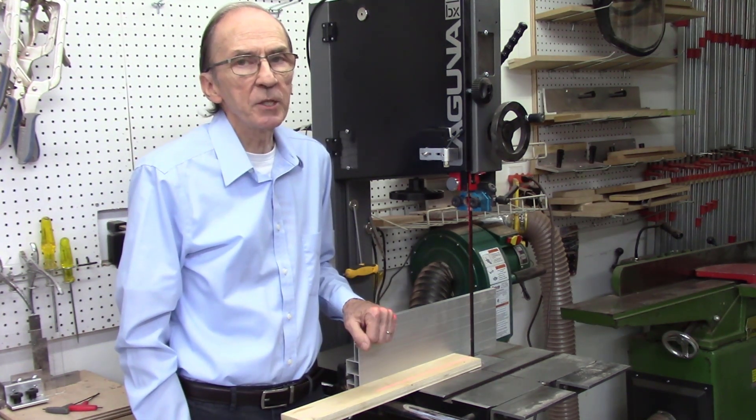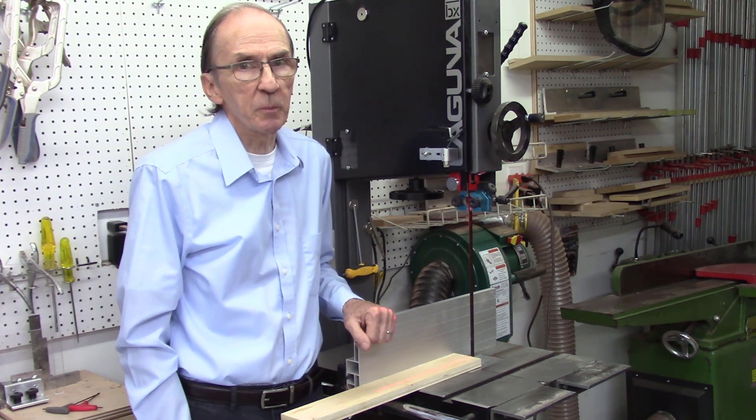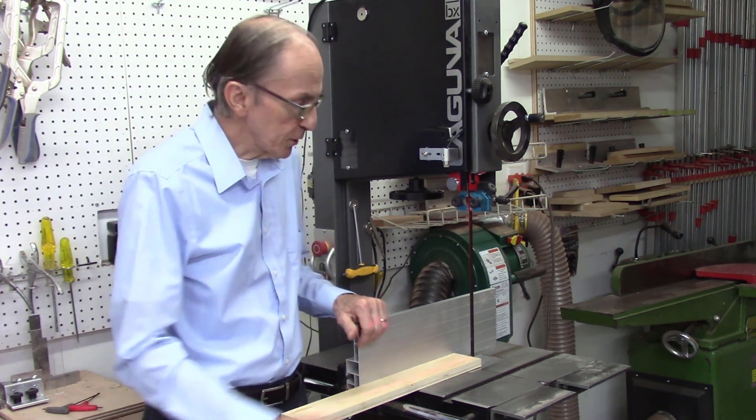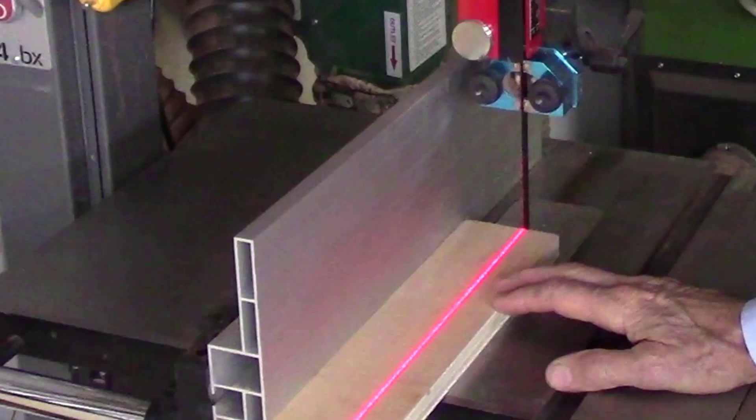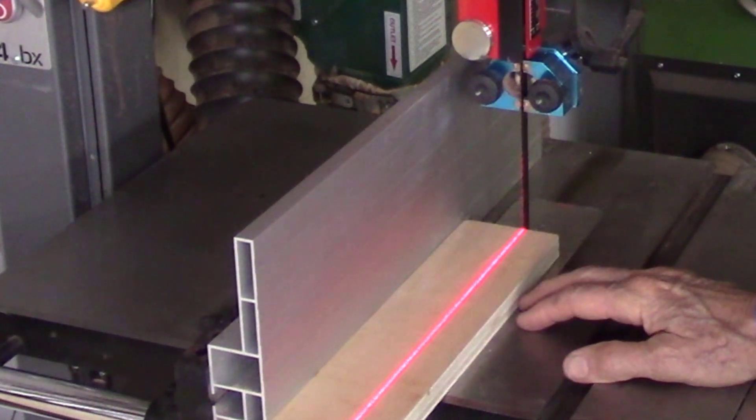The AcuPath provides two major features for improved operation of your bandsaw. First, it projects this red laser beam to show you the exact position of your bandsaw blade going through the board you're cutting. Undoubtedly the most important feature is improved safety when operating the bandsaw.